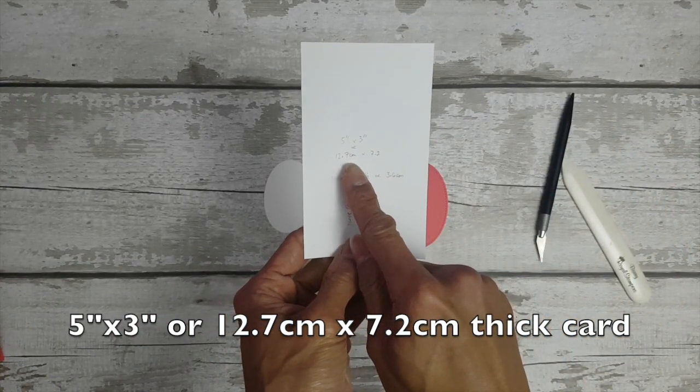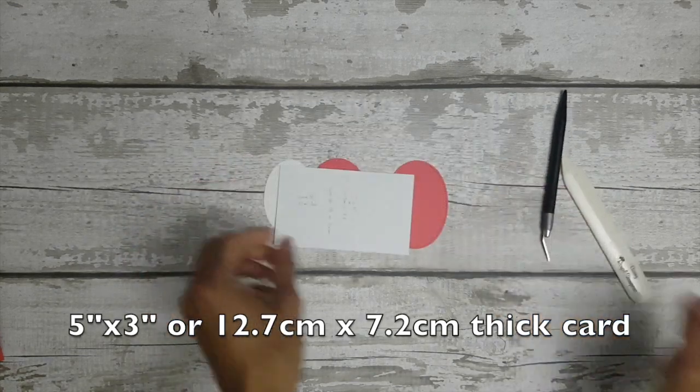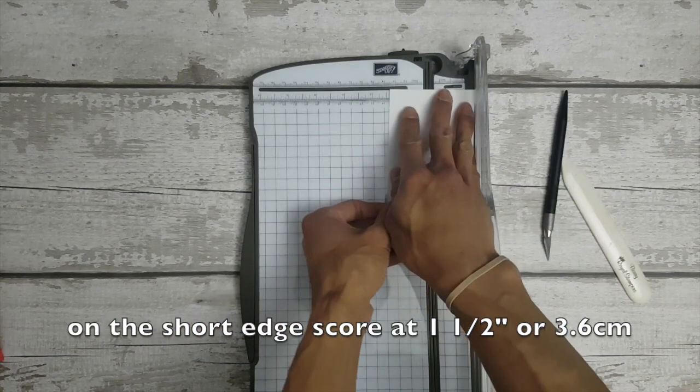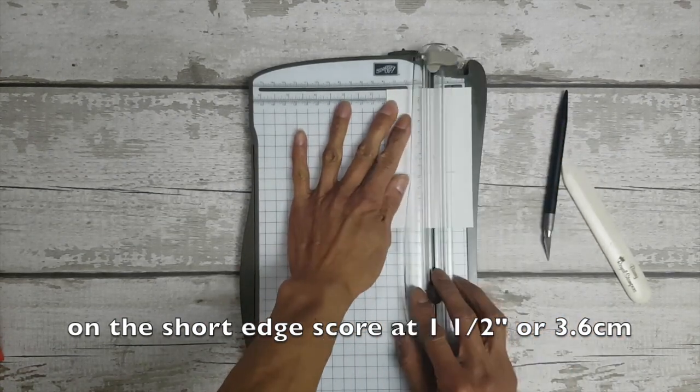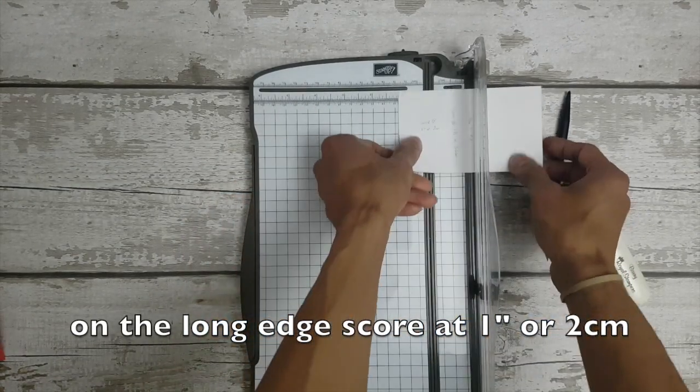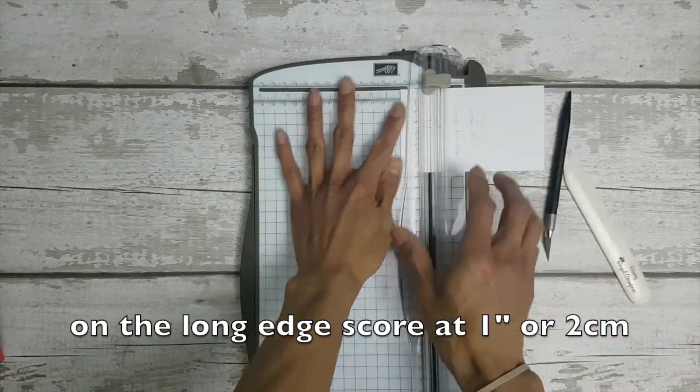So you'll need a thick card measuring five by three inches or twelve point seven centimeters by seven point two centimeters. We will be scoring on the short edge at one and a half inch or three point six centimeters and then turn it 90 degrees and on the long edge score at one inch or two centimeters.